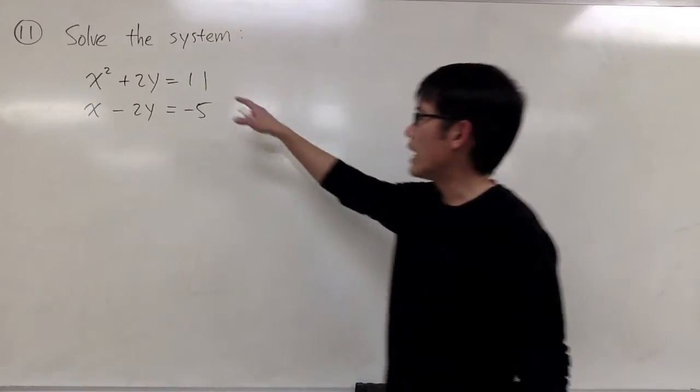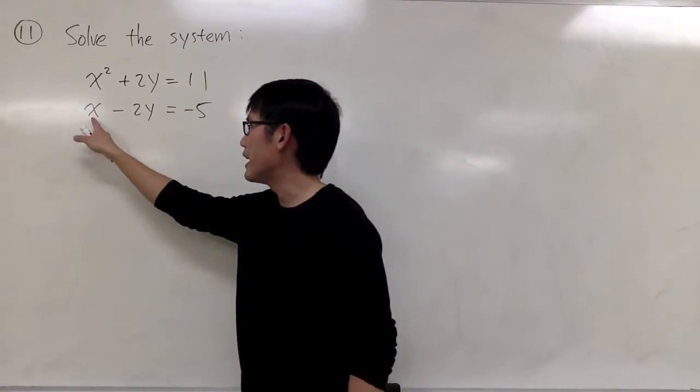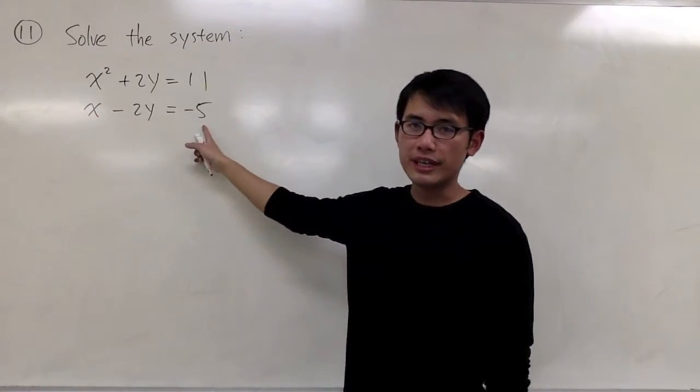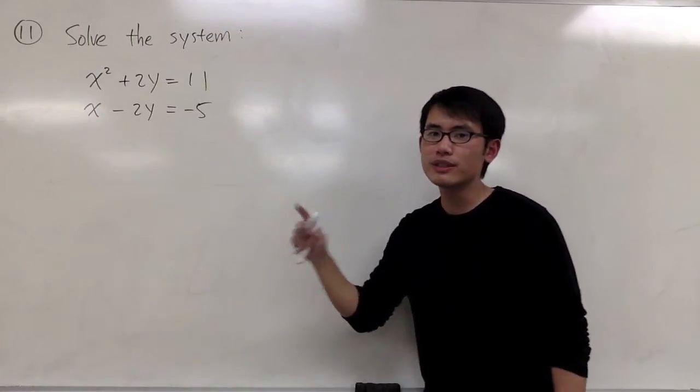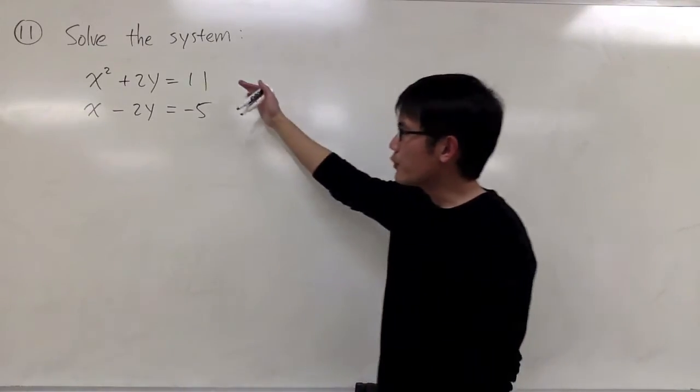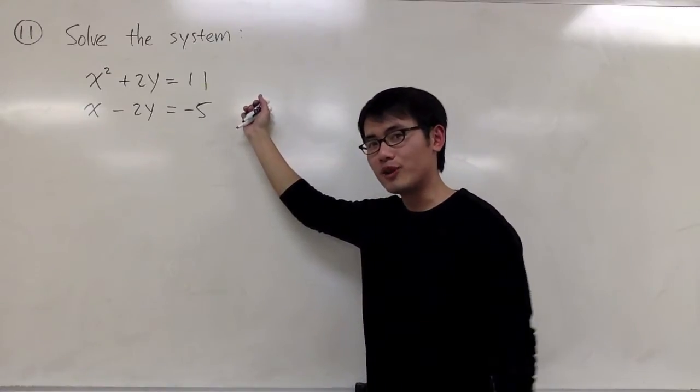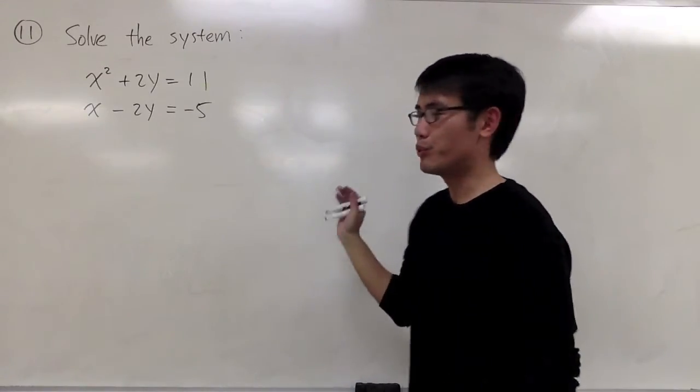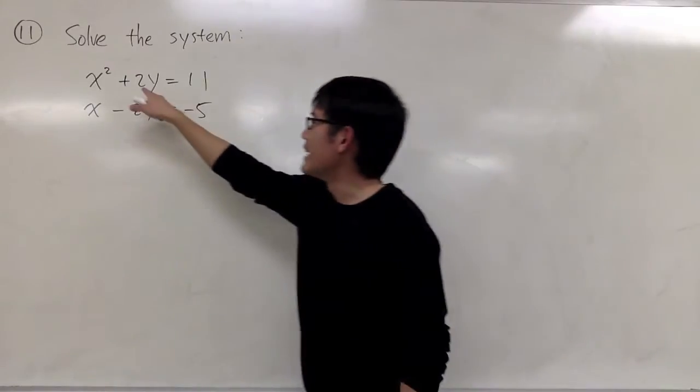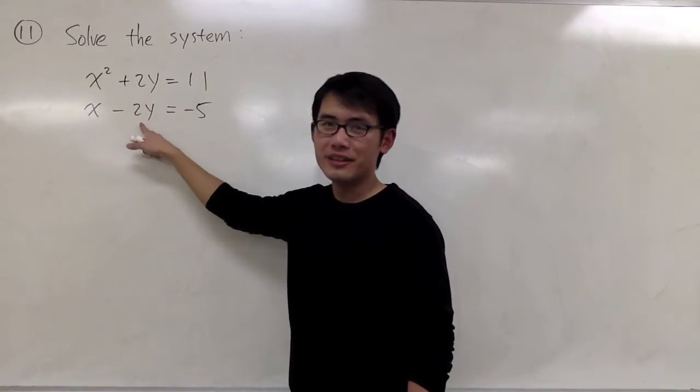For question number 11, we have x² + 2y = 11, and we also have x - 2y = -5. We have two equations with two unknowns, x and y. In order to proceed, I have to get rid of one variable first. But this question is pretty convenient, because I see that we have positive 2y right here and a negative 2y right here.